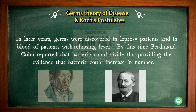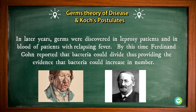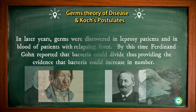In later years, germs were discovered in leprosy patients and in the blood of patients with relapsing fever. By this time, Ferdinand Cohn reported that bacteria could divide, thus providing evidence that bacteria could increase in number.